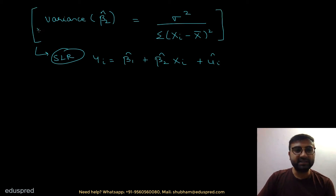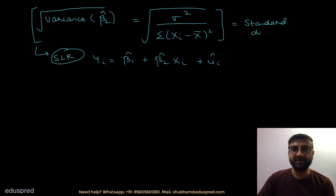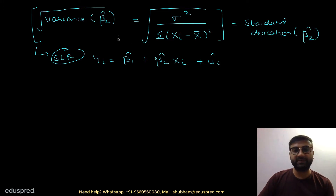If you take the square root of the variance formula, the expression that you get is actually called the standard deviation of beta 2 hat. This is how you define the standard deviation of beta 2 hat. But we never work with the standard deviation of beta 2 hat.